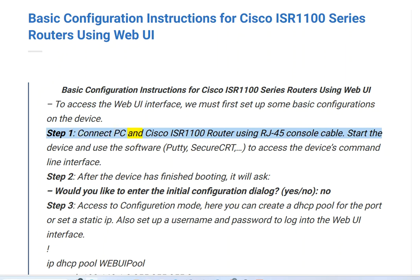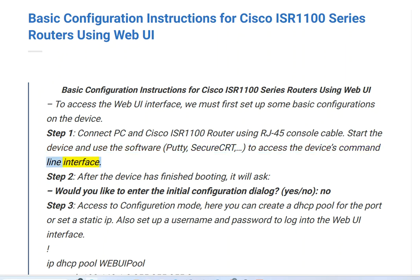Connect PC and Cisco ISR 1100 Router using an RJ45 console cable. Start the device and use software such as PuTTY or SecureCRT to access the device's command line interface.